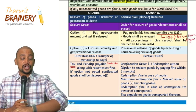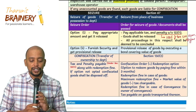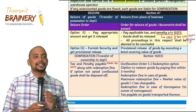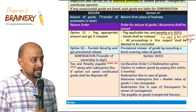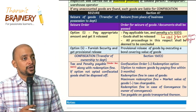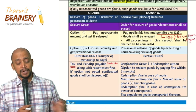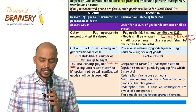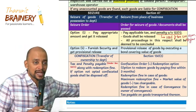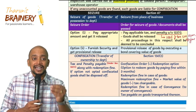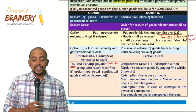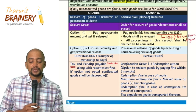Suppose the taxpayer has not exercised either option — then the department will pass a confiscation order and give a redemption option under section 130. If the person has not exercised option one or option two under section 67, a confiscation order will be passed under section 130. Once the confiscation order is passed, he will be given an option to pay a fine called the redemption fine. He needs to pay tax and penalty anyway, plus extra — the redemption fine. The time limit within which he must pay is three months from the date of the confiscation order.